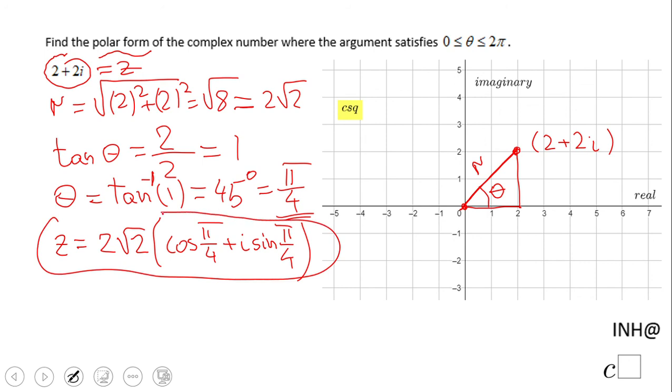You notice this pi over 4 is between 0 and 2 pi. Obviously you can go around and get another set of coordinates for the same complex number, but we don't need that.